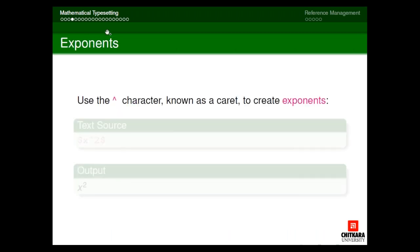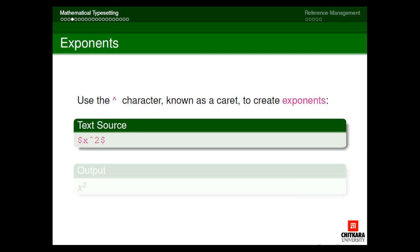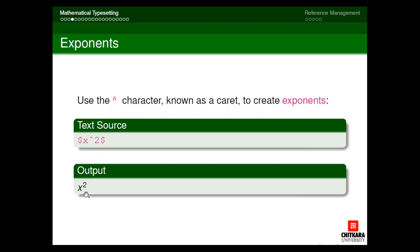Next, how to write exponents in LaTeX. Suppose I want to write x to the power 2. Whenever I want to write an exponent, I use the caret character — the one available on your keyboard at number key 6. Since it is again a mathematical symbol, we enclose it in dollar signs and write x caret 2. When I execute it, I will get my output as x squared.